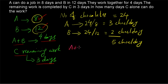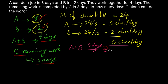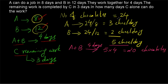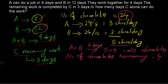A and B are working together for 4 days. In 1 day they consume 5 chocolates, so within 4 days A and B will consume 5 times 4 equals 20 chocolates. The 20 chocolates are finished by A and B. The total number of chocolates is 24, so the number of chocolates remaining is 4. C is completing the remaining work in 3 days, meaning C is completing these 4 chocolates.